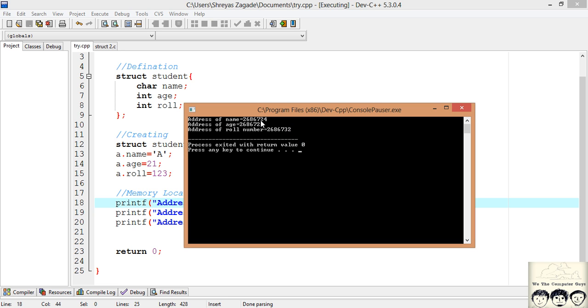As you can see, the address of name is 723. I will just read the last three digits: 723, the second is 728, and the last is 732. In this case, even though the character is occupying only one byte, the three bytes in between are left blank, and then our age is started, and then our roll number is started.